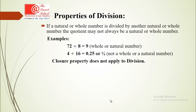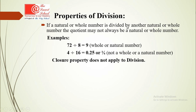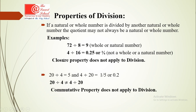Now, properties of division. If a natural or whole number is divided by another, the quotient may not always be a natural or whole number. For example, 72 divided by 8 equals 9, which is a whole number. But 4 divided by 16 equals 0.25, which is not a whole or natural number, so closure property does not apply to division. For commutative property: 20 divided by 4 equals 5, but 4 divided by 20 equals 0.2. These are not equal, so commutative property does not apply to division.